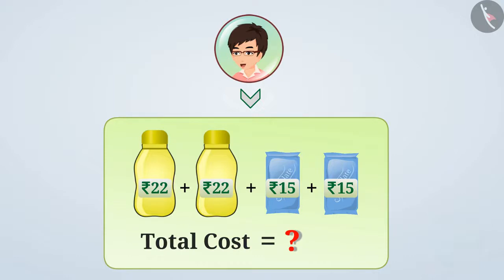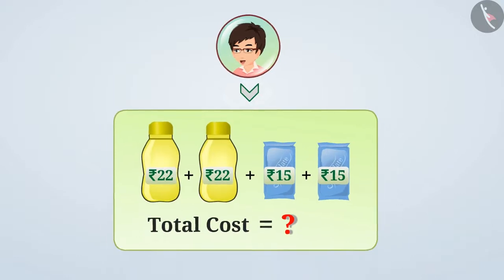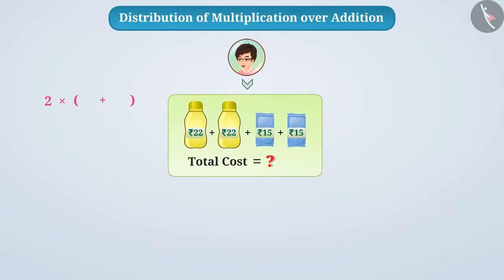Let me tell you, you can find it in two ways. You can double this by adding the cost of a bottle of juice and cost of the chocolate, or you can add them by finding the cost of two bottles of juice and the cost of two chocolates separately.